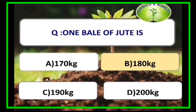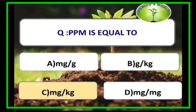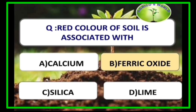One bale of jute is 180 kg. One bale of cotton is 170 kg. One bale of mustard is 181 kg. One bale of parsons (Patsun) is 180.4 kg.